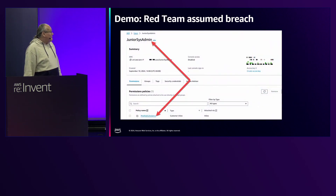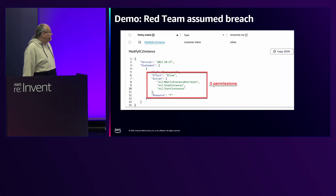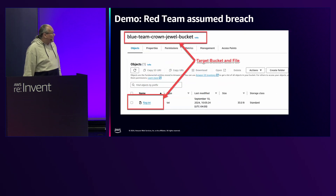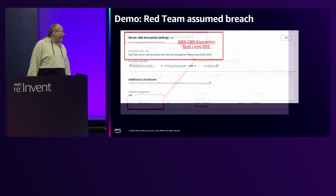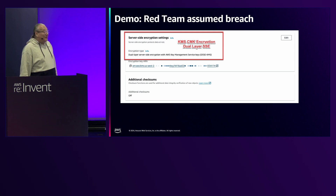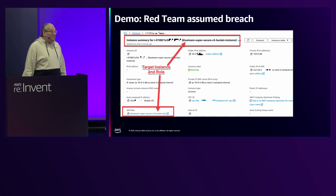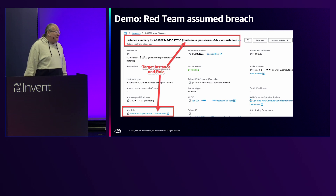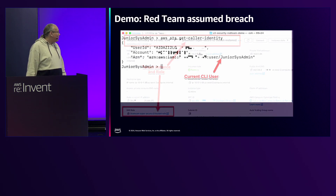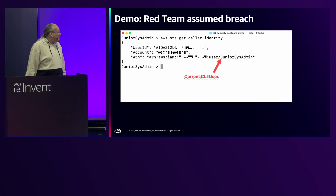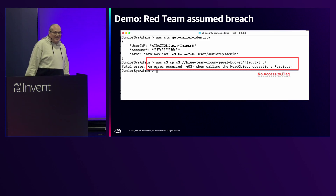Here's the user and the policy. Our target is going to be a flag inside the S3 blue team bucket, encrypted with dual layer encryption. In order to get that file, we have to move to a role which has permissions to access that bucket — specifically the EC2 instance that has the blue team S3 bucket role. If we check the command line, we're currently the junior system admin. If we try to get that file, it's access denied.